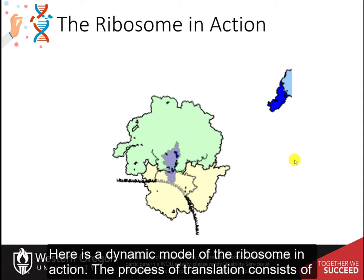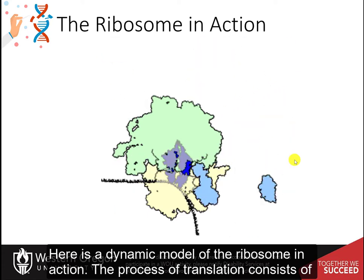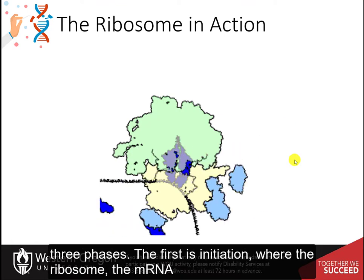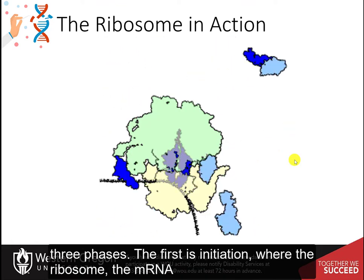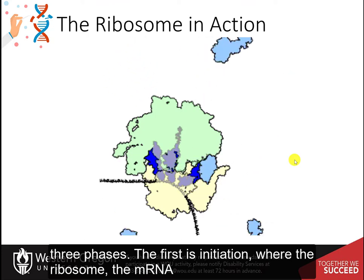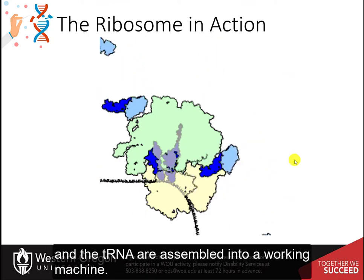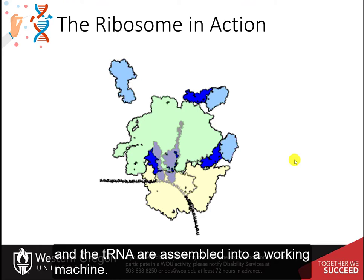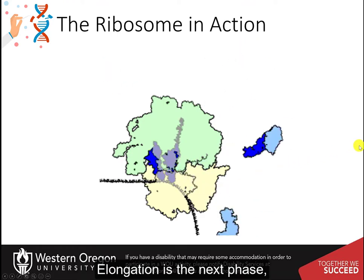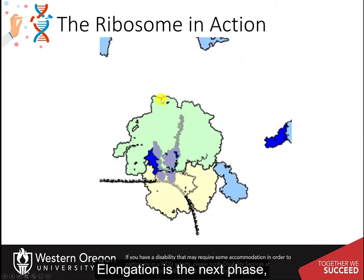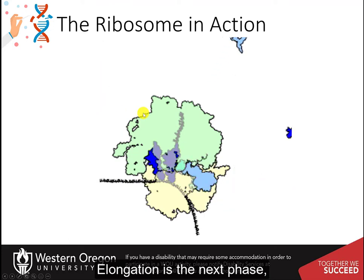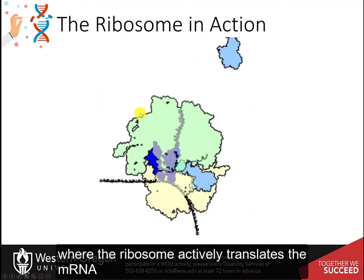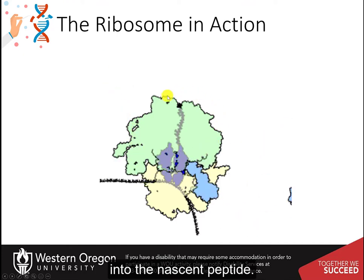Here is a dynamic model of the ribosome in action. The process of translation consists of three phases. The first is initiation, where the ribosome, the messenger RNA, and the tRNA are assembled into a working machine.